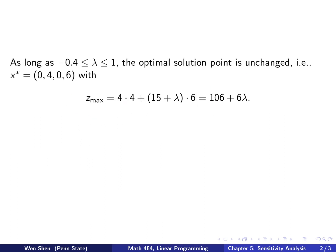So as long as lambda is in that range, then C star is non-negative, and the tableau is still the final tableau, so the optimal solution point is unchanged. So this X star is still optimal. And then we can put that in and find out the optimal value, the new Z max value. Put it in 4 and 6, multiply by 4, that's C2, and then C4 multiplied by 6, C4 is 15 plus lambda, and if you work this out, you get 106 plus 6 lambda.